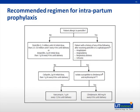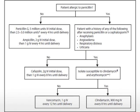Penicillin remains the agent of choice for intrapartum antibiotic prophylaxis, with ampicillin as an acceptable alternative. Penicillin-allergic women who do not have a history of anaphylaxis, angioedema, respiratory distress, or urticaria following administration of a penicillin or cephalosporin should receive cefazolin. Antimicrobial susceptibility testing should be ordered for antenatal GBS cultures in penicillin-allergic women at high risk for anaphylaxis. Penicillin-allergic women at high risk for anaphylaxis should receive clindamycin if their GBS isolate is susceptible to clindamycin and erythromycin as determined by susceptibility testing.